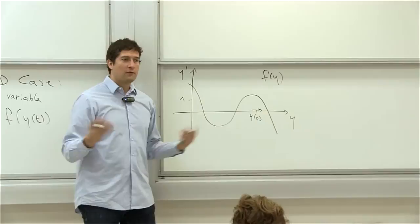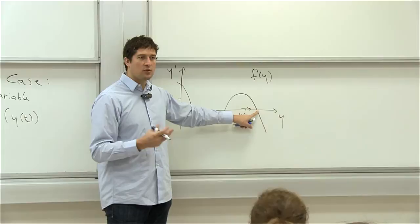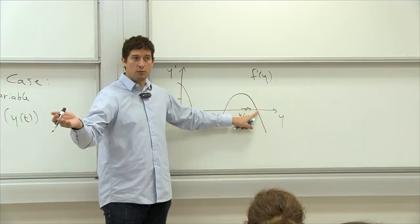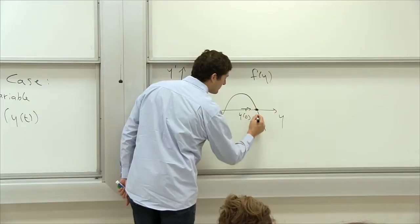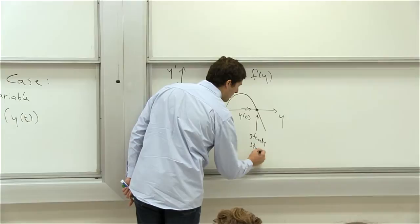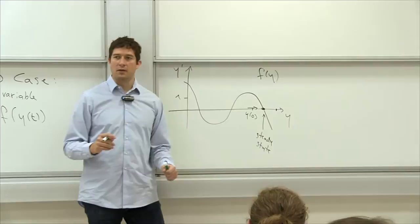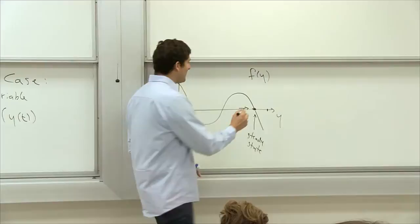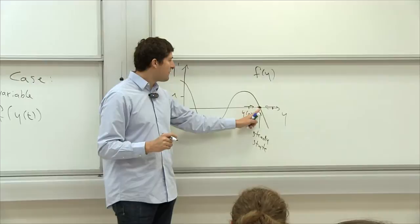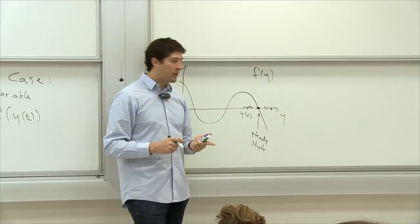If you start right at a point where f equals zero, the population is stable — it's a steady state. If you start away from that point, say over here where f is negative, the population is decreasing and you converge towards the steady state. Because solutions starting anywhere nearby converge to it, we call this a stable steady state.